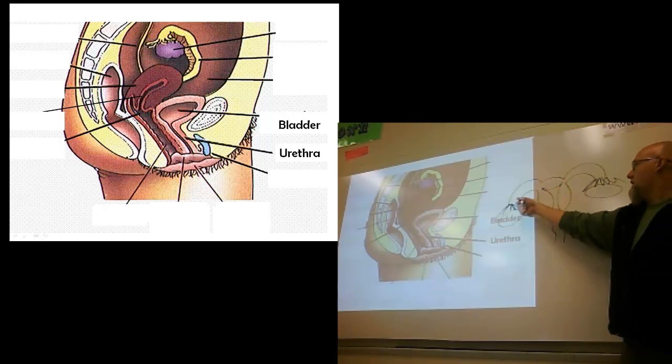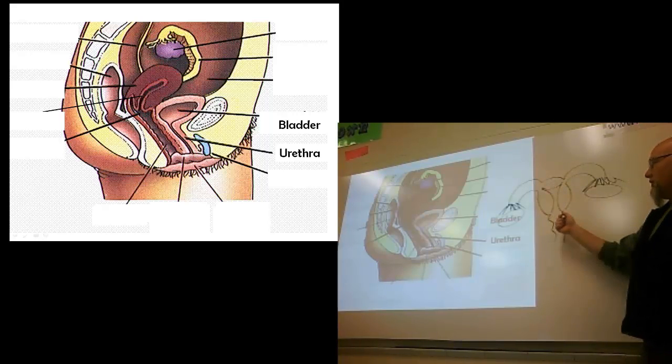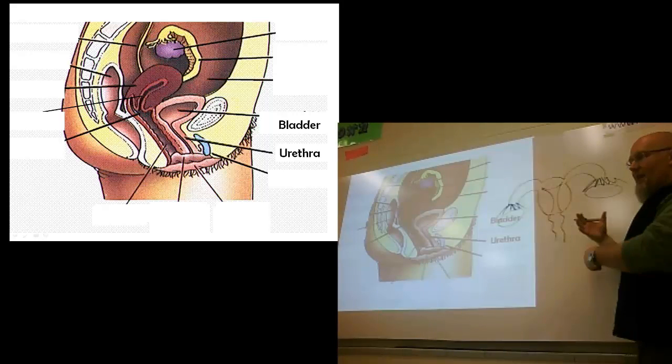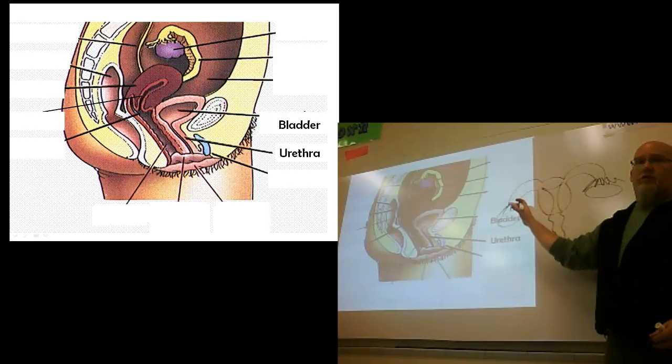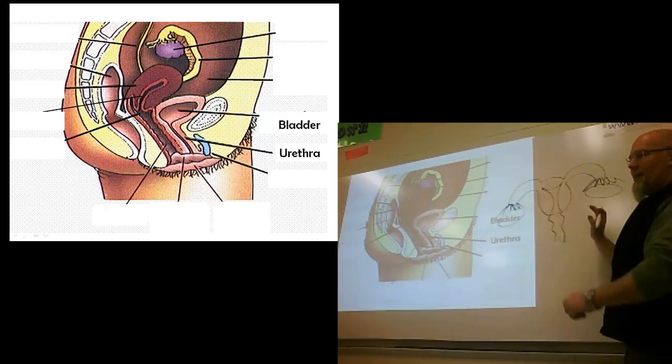You've got the ovaries. You've got the fallopian tubes. You've got the uterus here, the vaginal canal right here, cervixes right here. This is typically a lot of times the picture we'll see in a textbook. Now, it's not necessarily incorrect because you're seeing all the structures, but it's not how it's laid out inside the female's body.